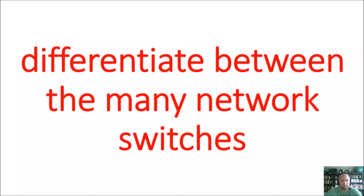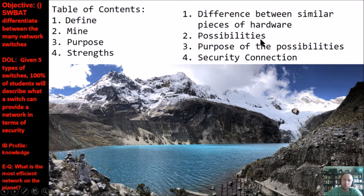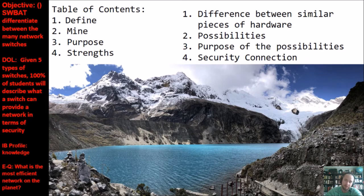The objective today is to differentiate between the many network switches that exist. This lesson has two parts: first, I'll define a switch, show you my switch at home, and talk about its purpose and strengths. In the second half, we'll go over the difference between switches and similar hardware, the possibilities switches have, their purpose, and finish with a security connection since this is a cybersecurity lesson.